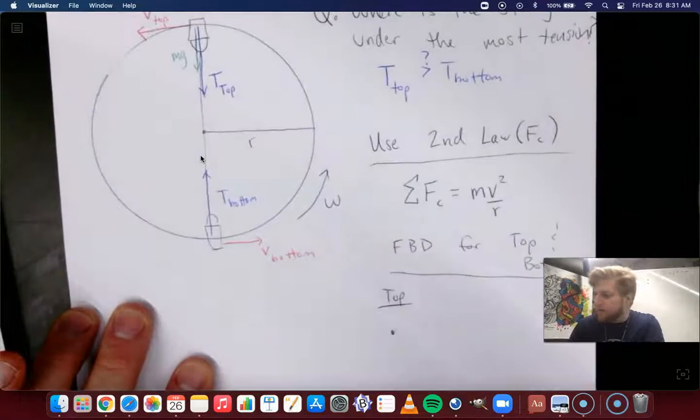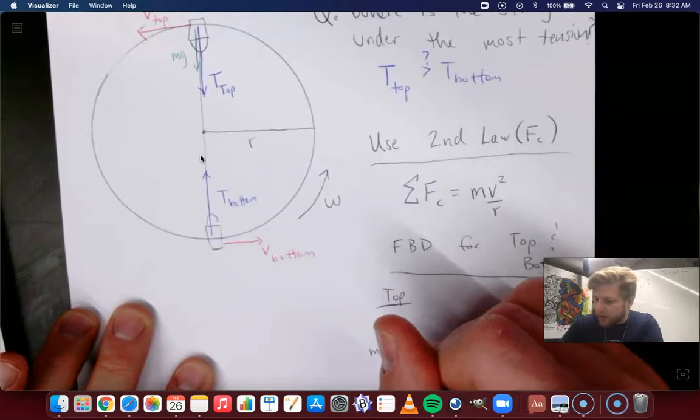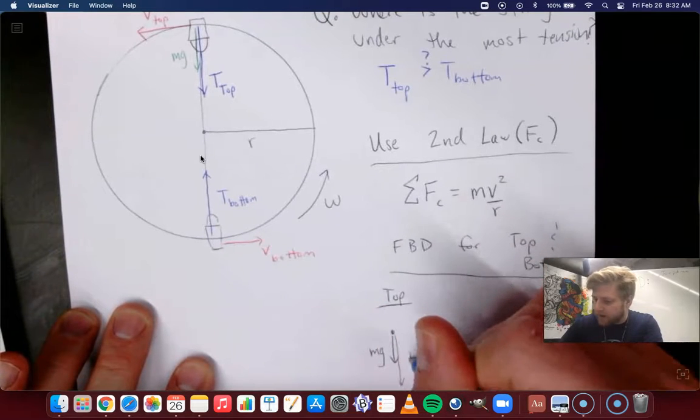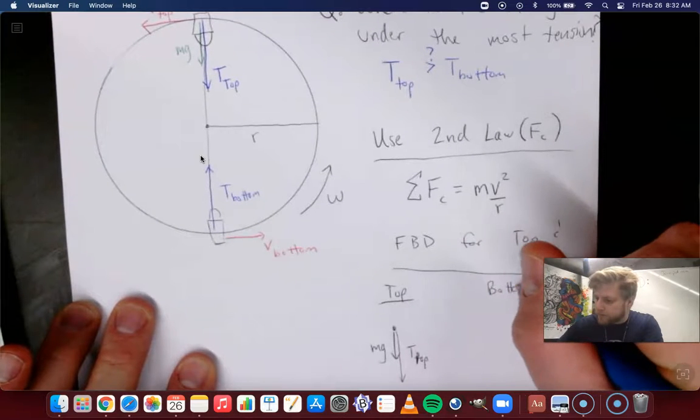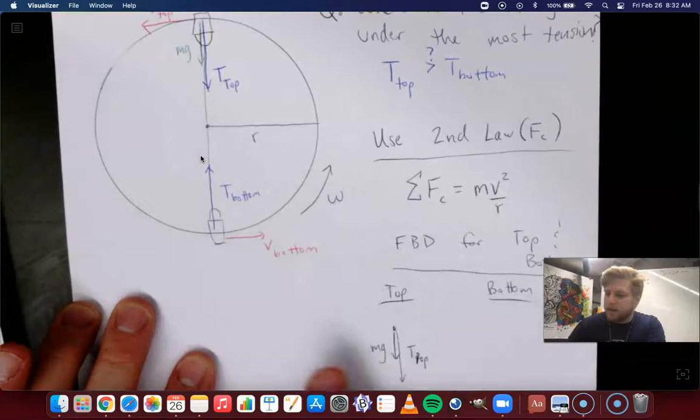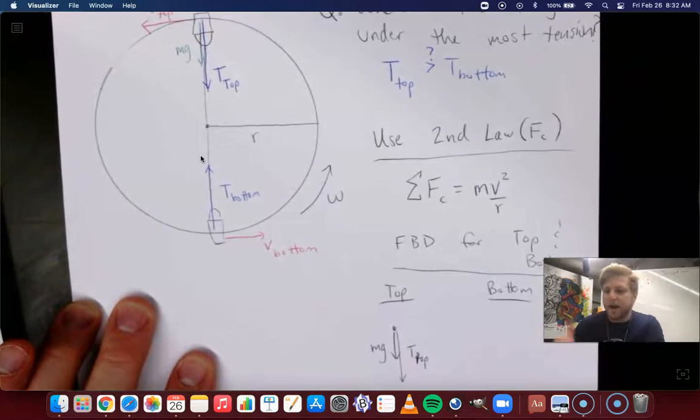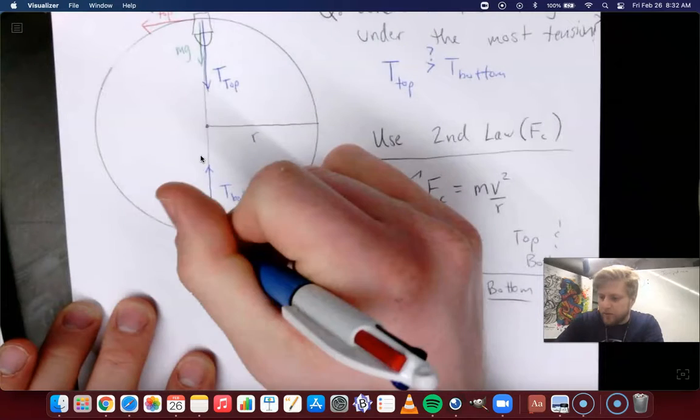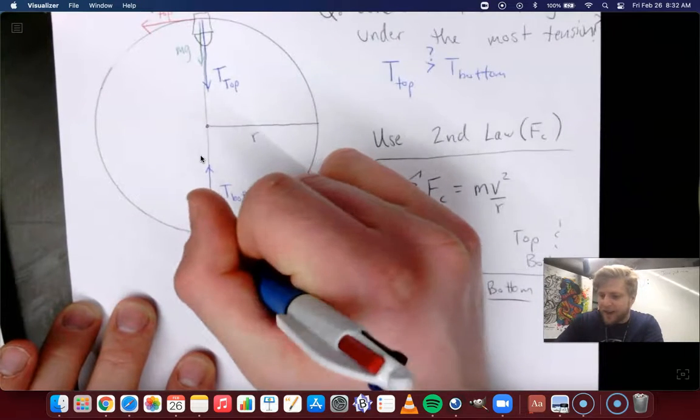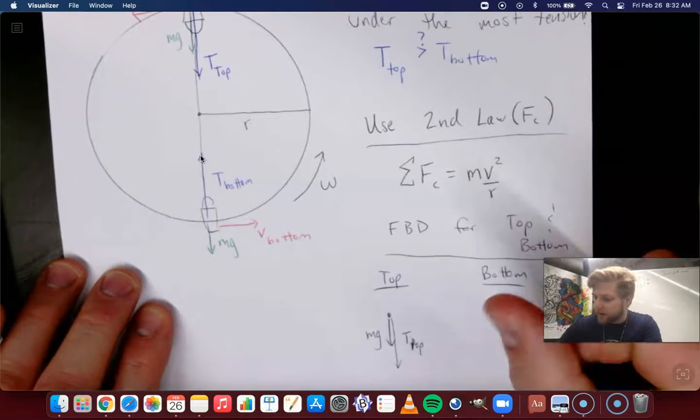And so we want to label that on our free body diagram. So we've got the weight force, mg, and we've also got the tension at the top. And then at the bottom, we've got the tension up towards the middle. Remember, that's acting up to keep the string in the circle. And in this case, we happen to have the weight force acting against the thing staying in the circle. So the dynamics are going to be a little bit different.